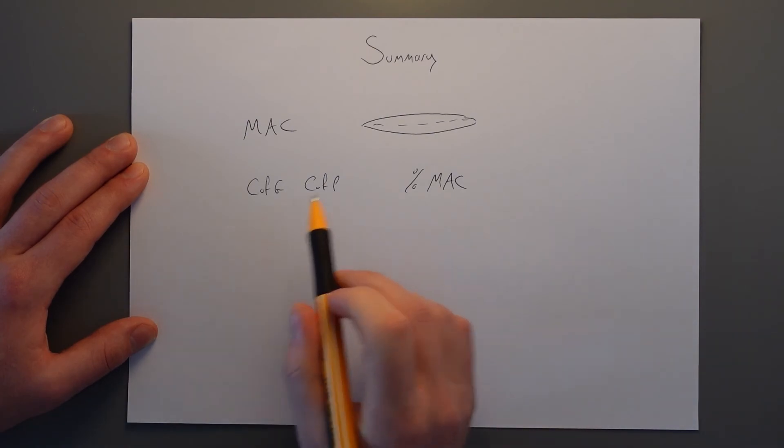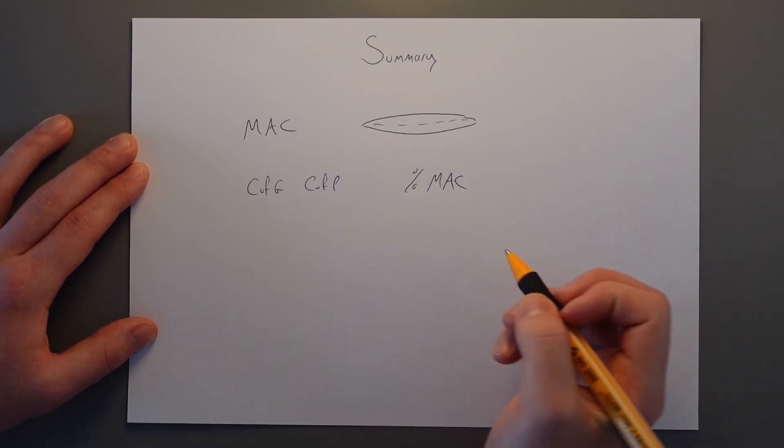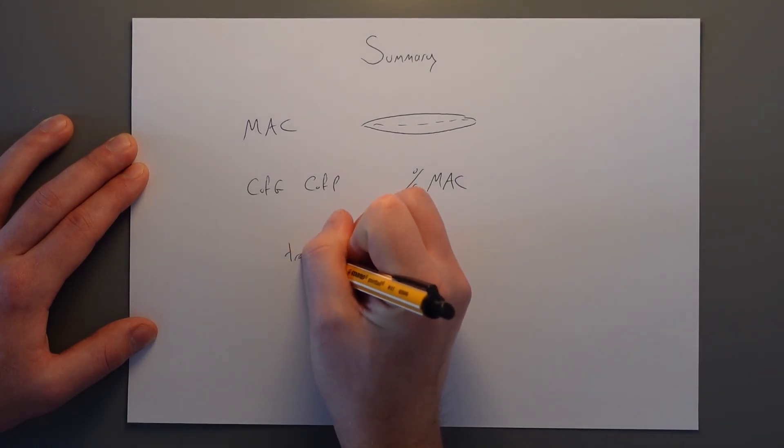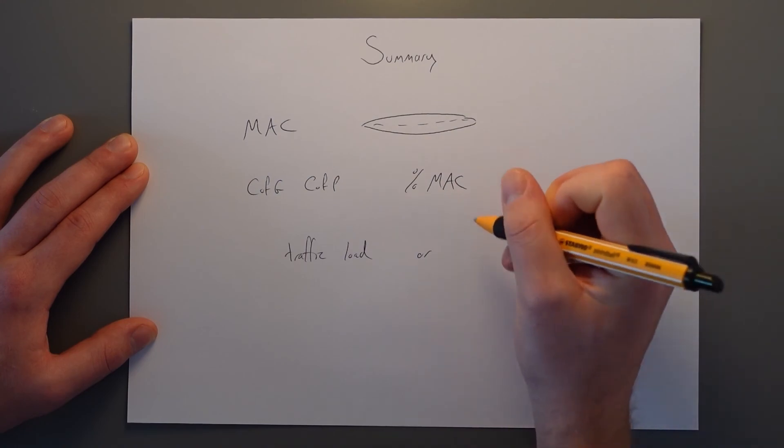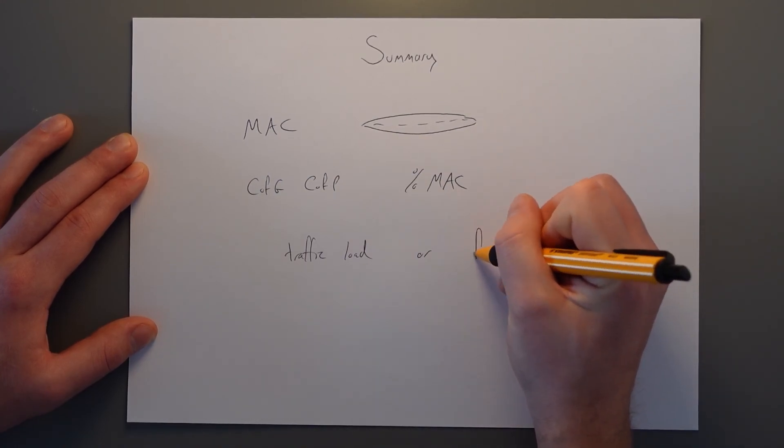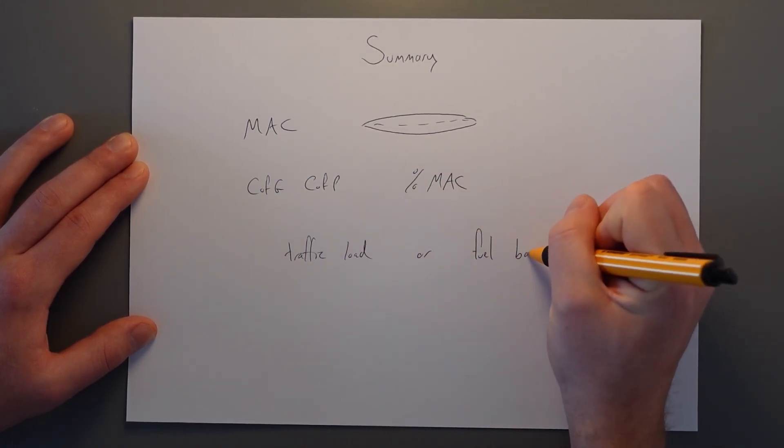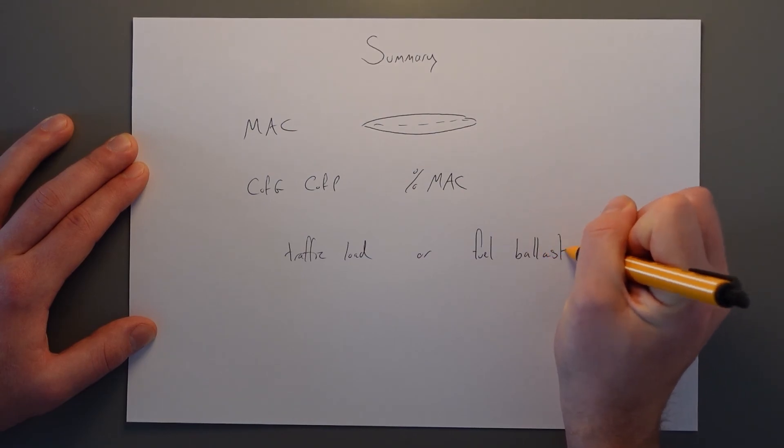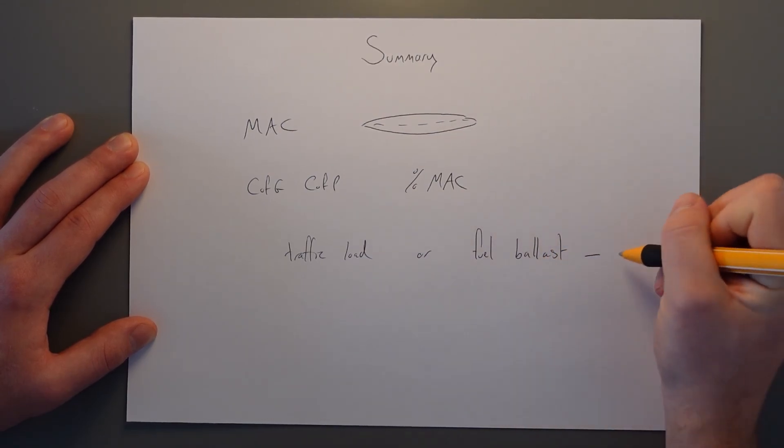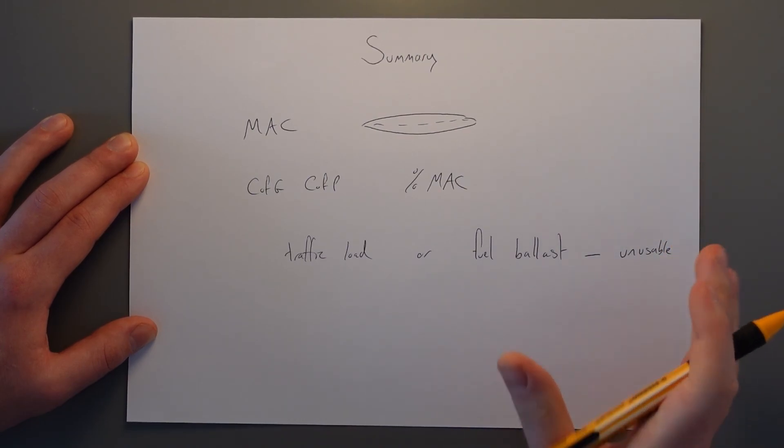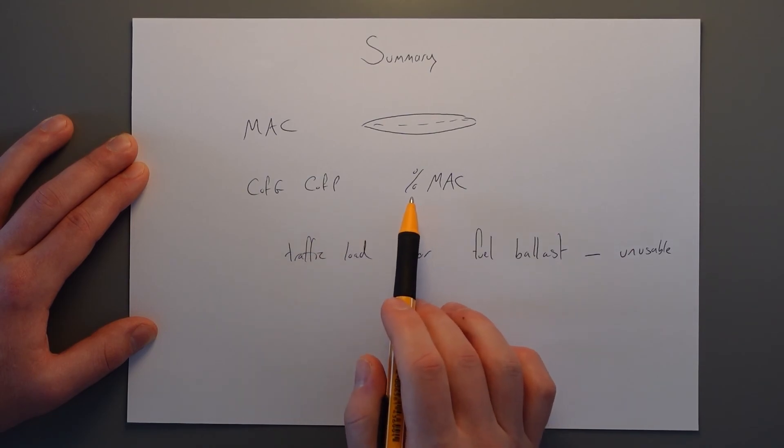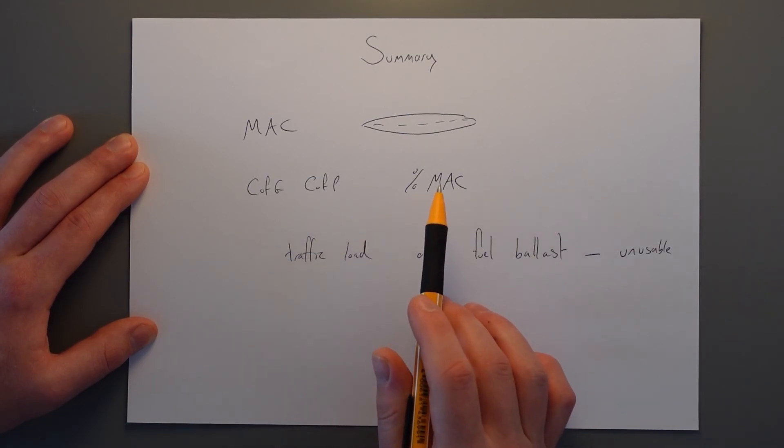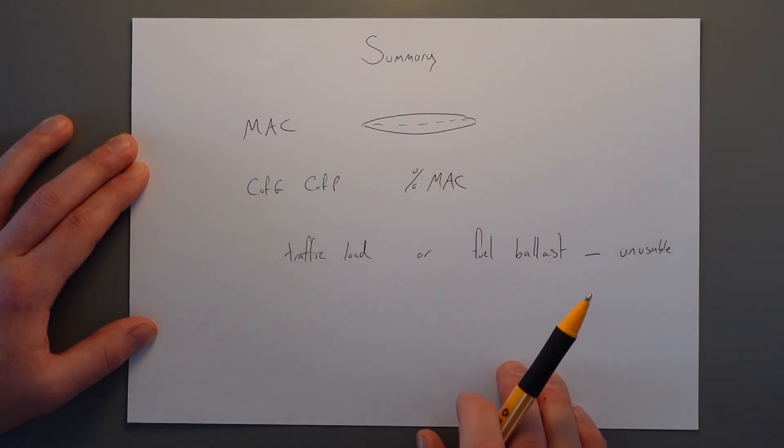If we are outside of our percentage MAC range we need to move traffic loads or add some fuel for ballast, which then is considered unusable because if we use it we will then be out of balance on our centre of gravity and centre of pressure might move outside the range for the percentage MAC causing uncontrollable handling issues.